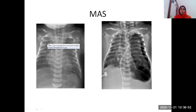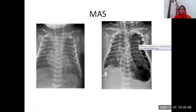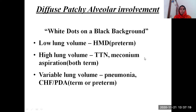You are seeing a reticulonodular pattern — this is typical in a neonate of meconium aspiration syndrome. In the second x-ray, you can make out a black thing around it — air into the chest cavity — which is a complication of meconium aspiration, and that is a pneumothorax. If you see white dots on a black background in a neonate: if it is low volume lung, think of HMD in a preterm baby; if it is high volume, think of TTN or meconium aspiration. It can also be pneumonia, CHF, or PDA.